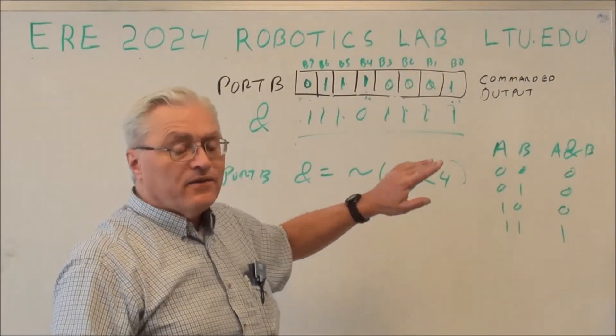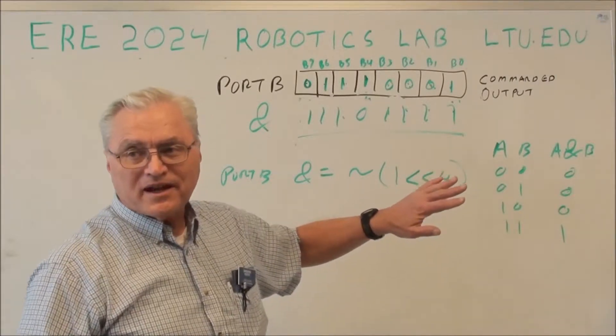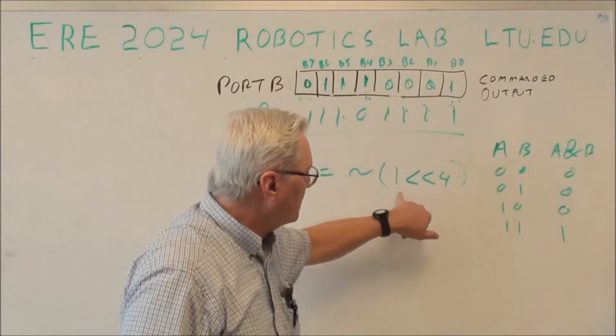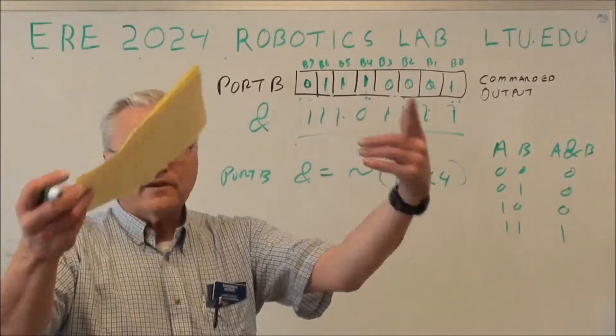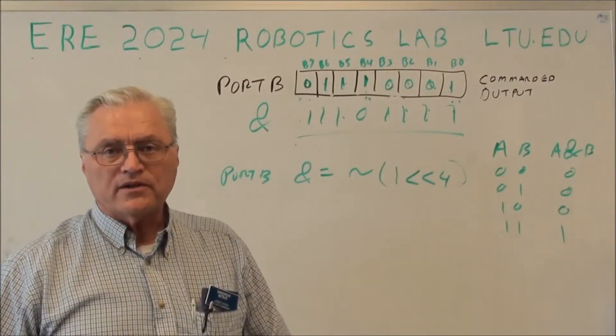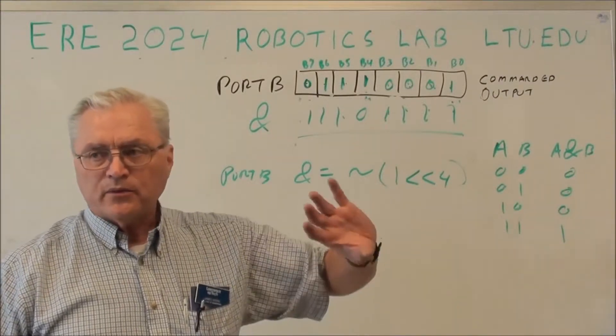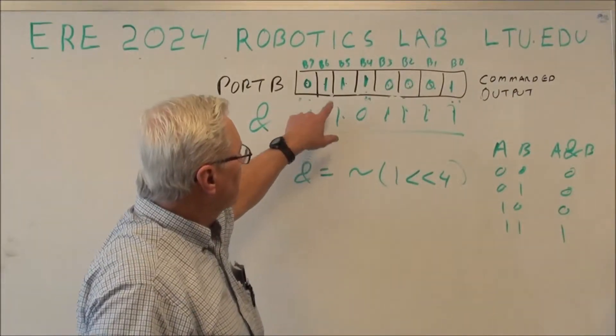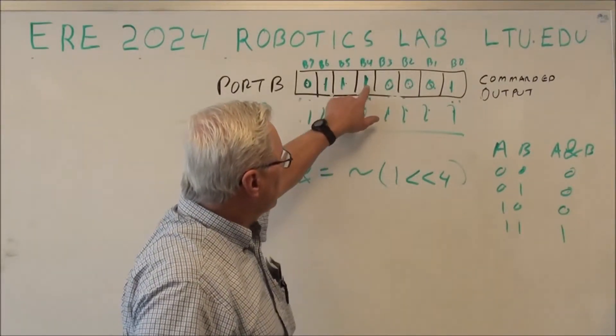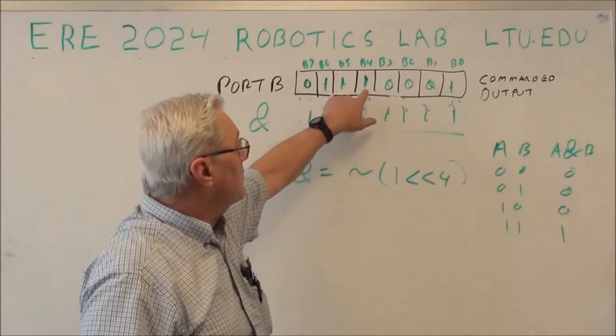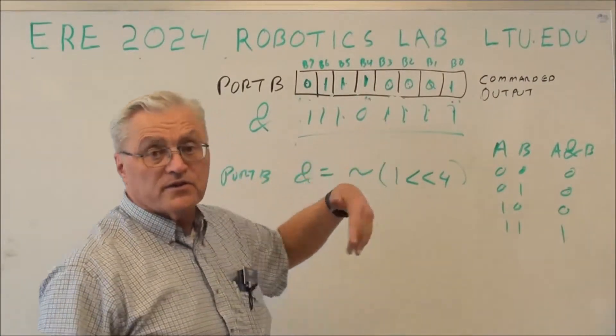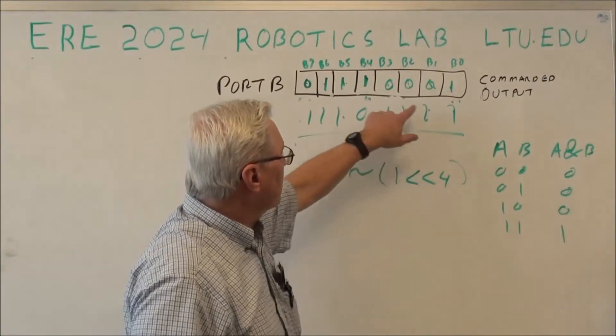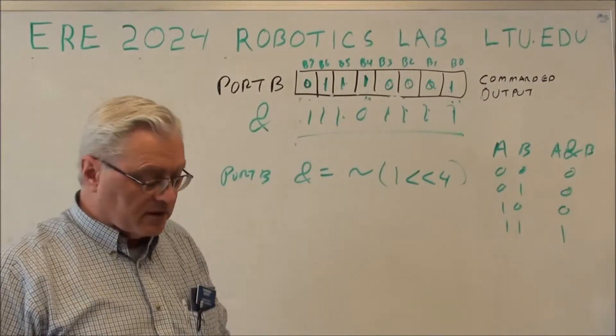And then I can just say port B AND equals NOT 1 shifted 4. I've taken a 1, I've shifted over 4, I've inverted that entire register and made the 1s into 0s and the 0s into 1s, and I do an AND equals, and now I've changed this particular bit from a 1 to a 0, or if it's 0 it stays 0, but I've converted it to 0 without touching any of the other bits in that register.